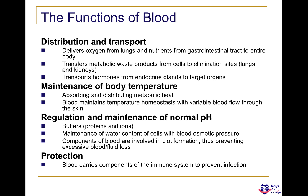Blood is also involved in the maintenance of body temperature by absorbing and distributing metabolic heat, as well as maintaining homeostasis. It's also involved in the regulation and maintenance of normal pH — the blood has a natural buffer known as carbonic acid (HCO3⁻). It's also involved in maintenance of water content of cells within blood osmotic pressure, and finally in protection — the blood carries components of the immune system which prevent infection but can also cause inflammation.